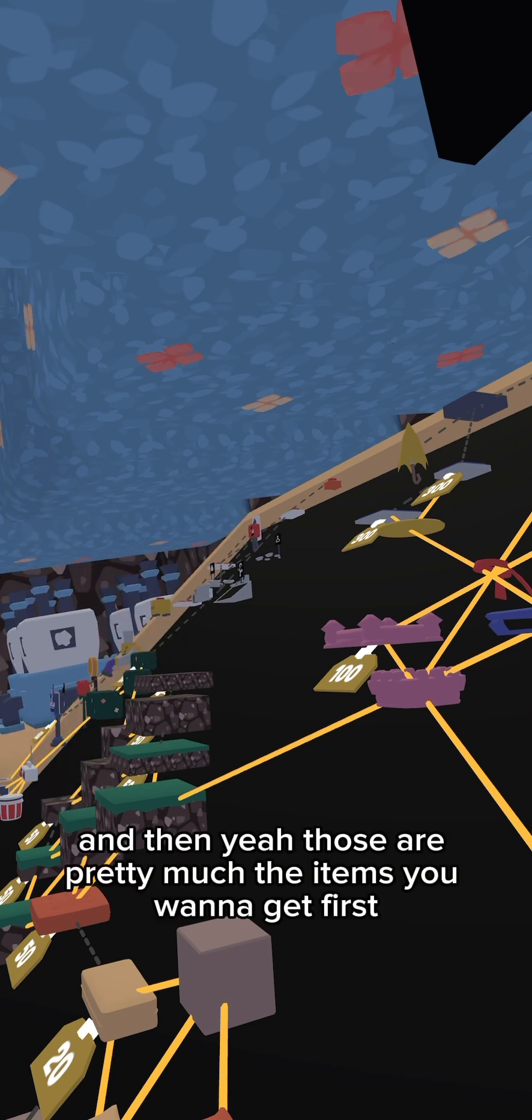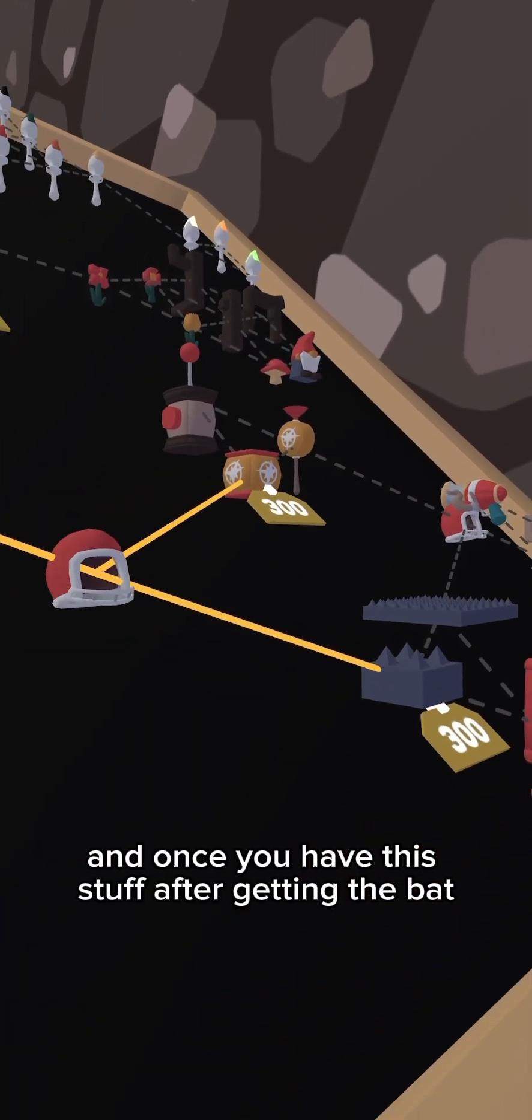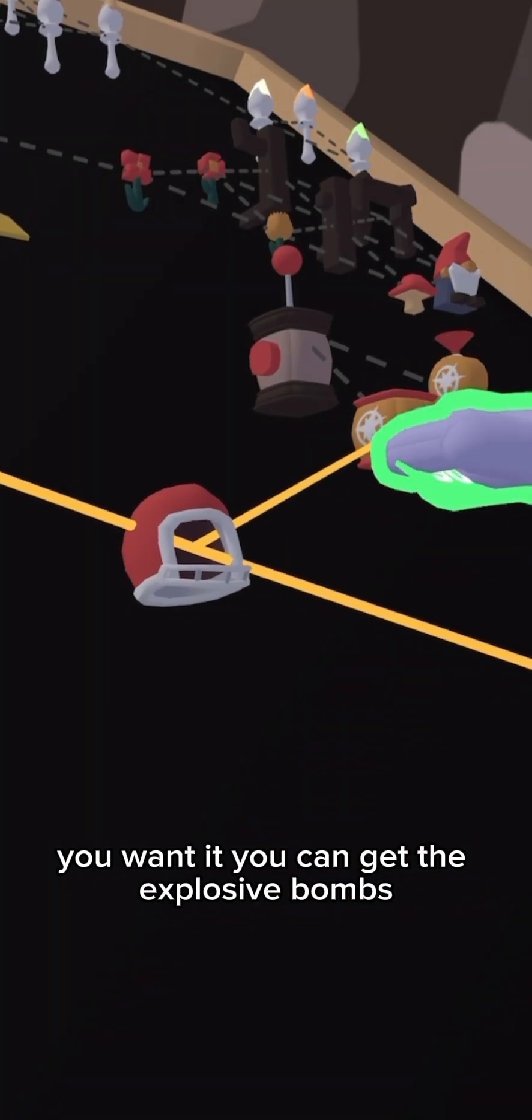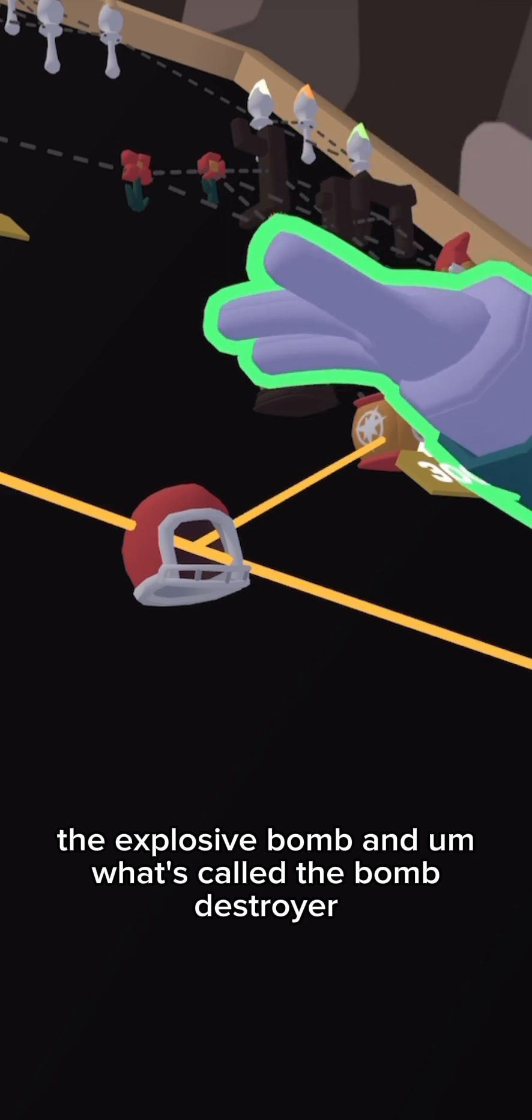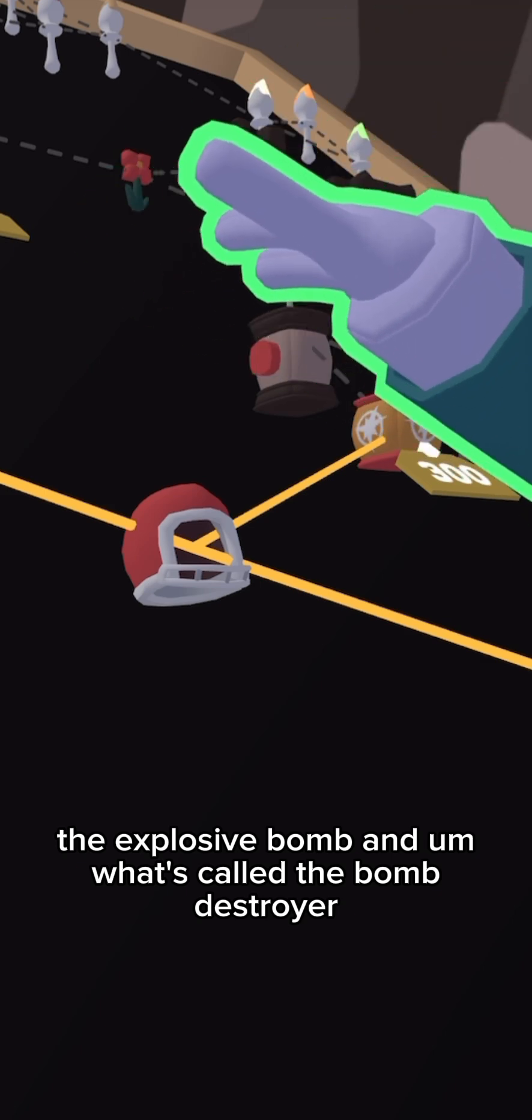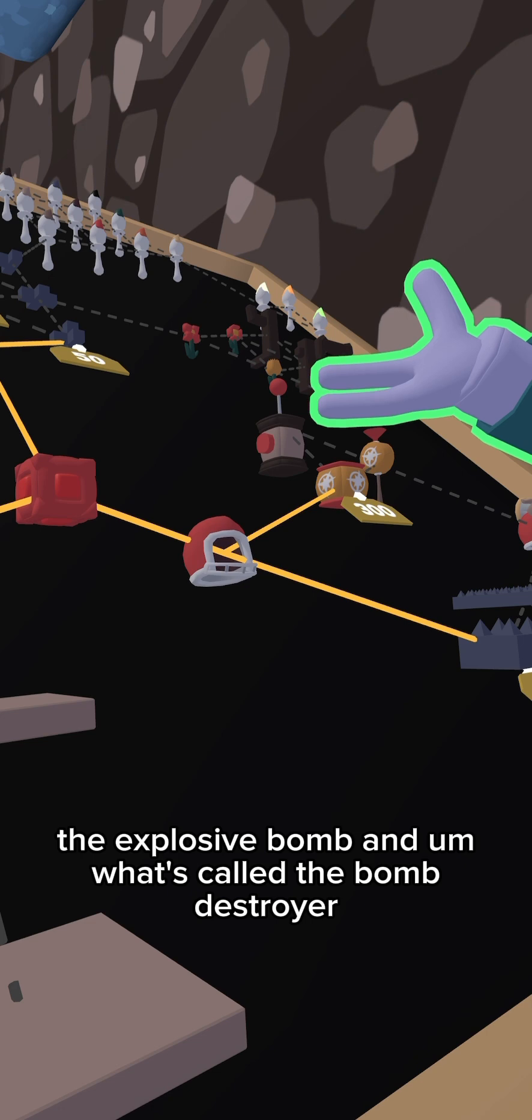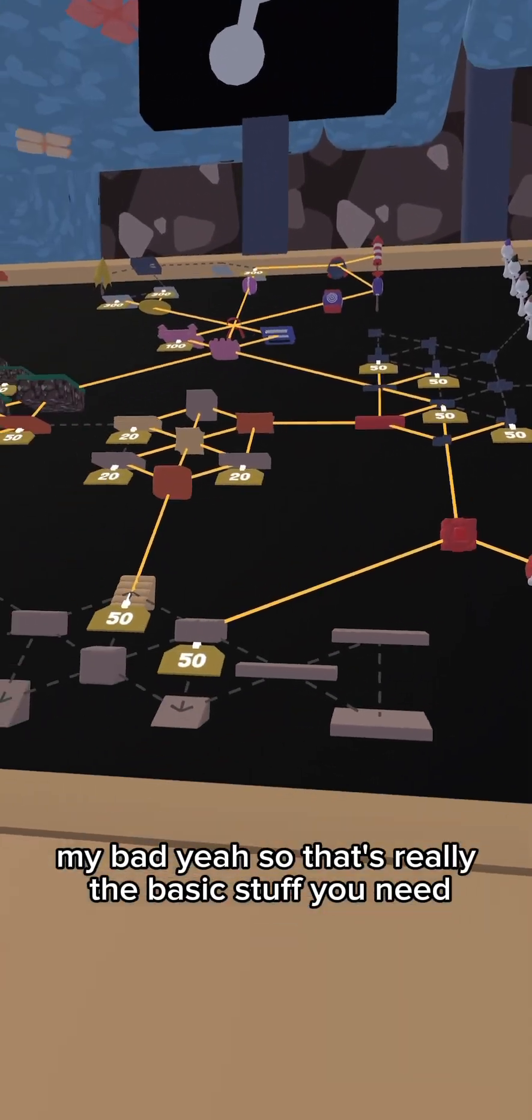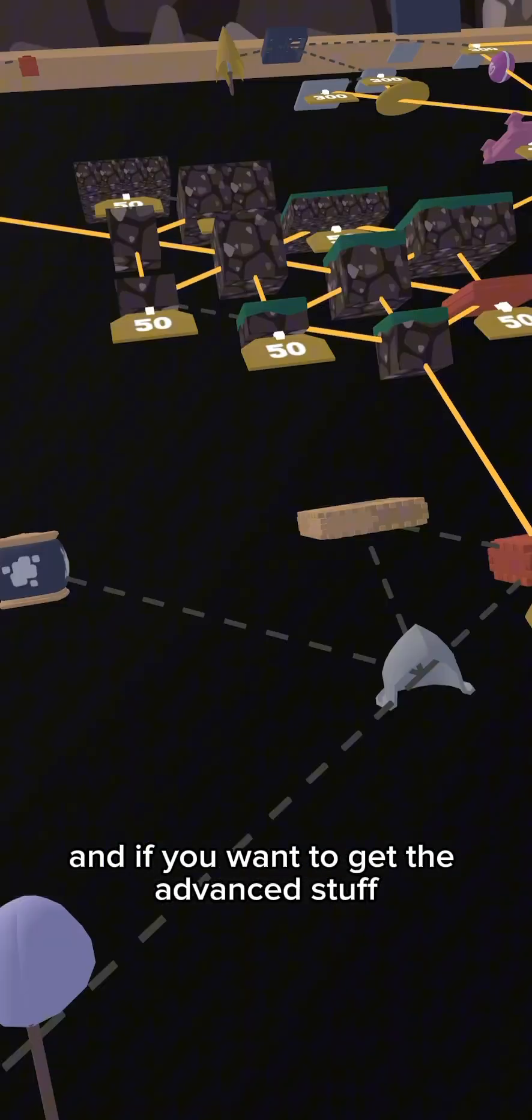And then yeah, those are pretty much the items you want to get first. And once you have this stuff after getting the bat, which I do not have yet but I'm probably gonna get it today, you want to get the explosive bombs, sticky explosive bomb, and what's it called, the bomb destroyer - the trigger for it, the detonator. My bad.